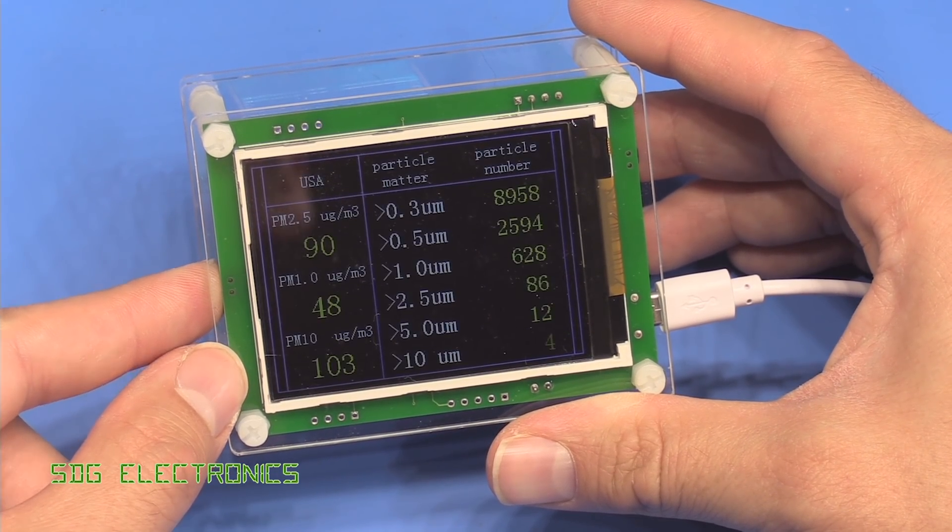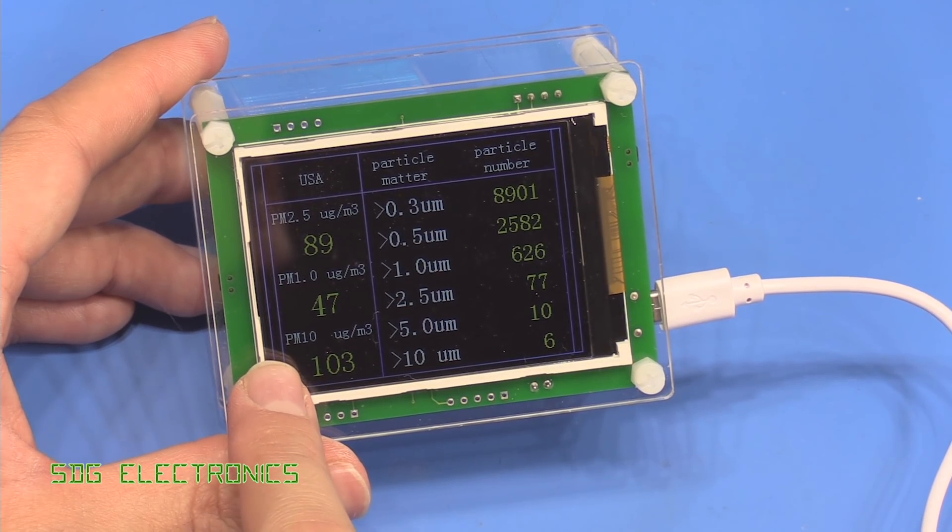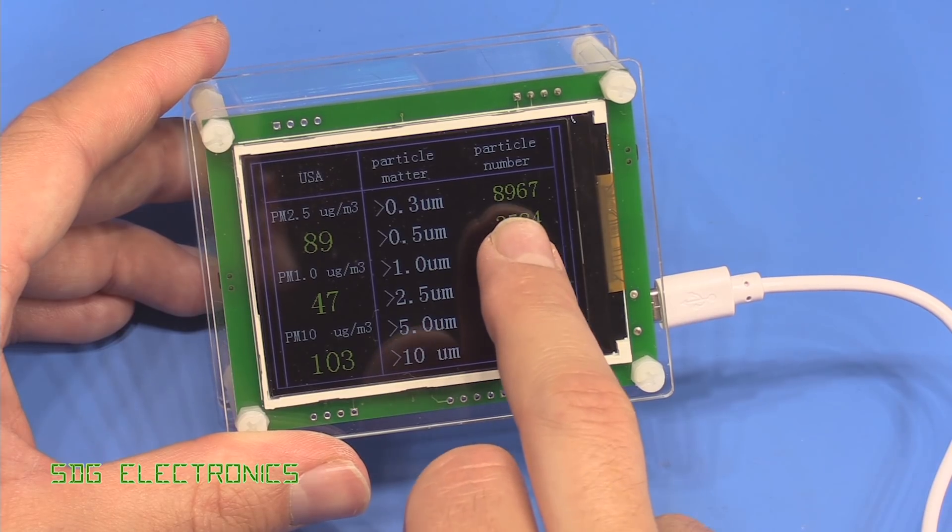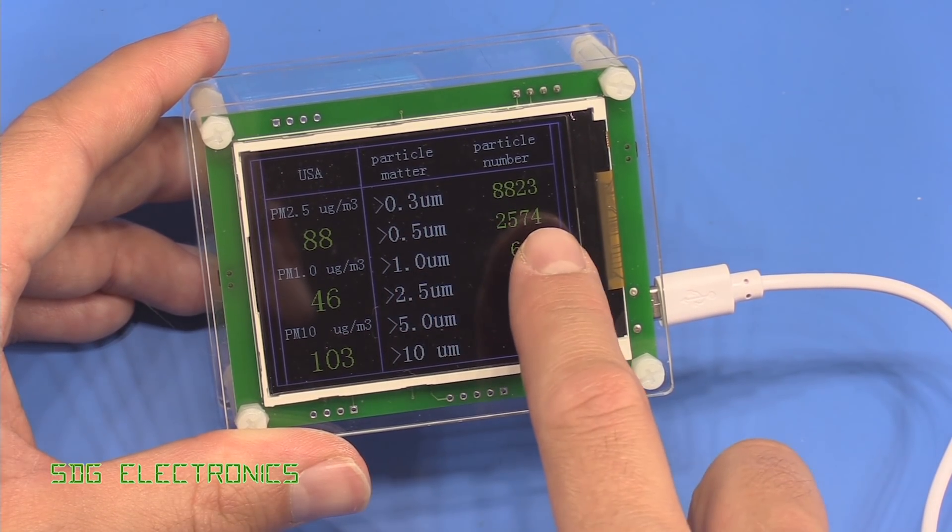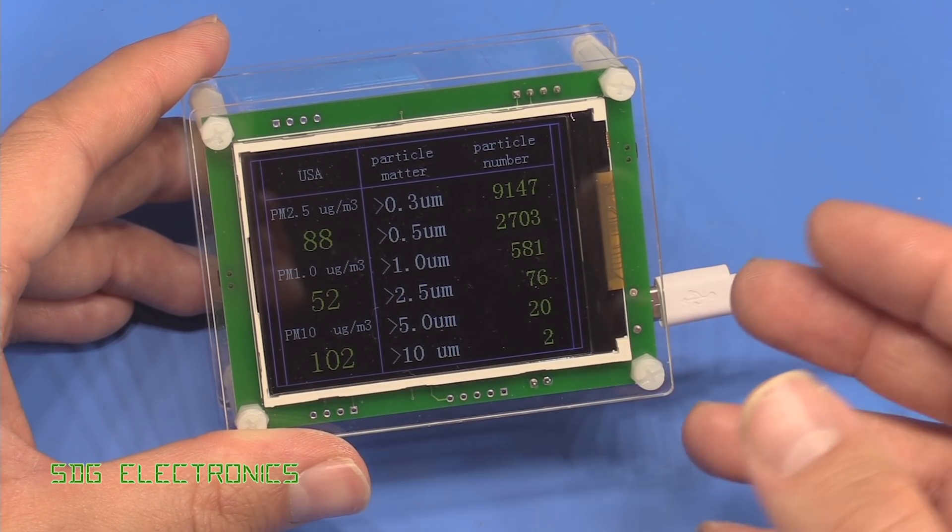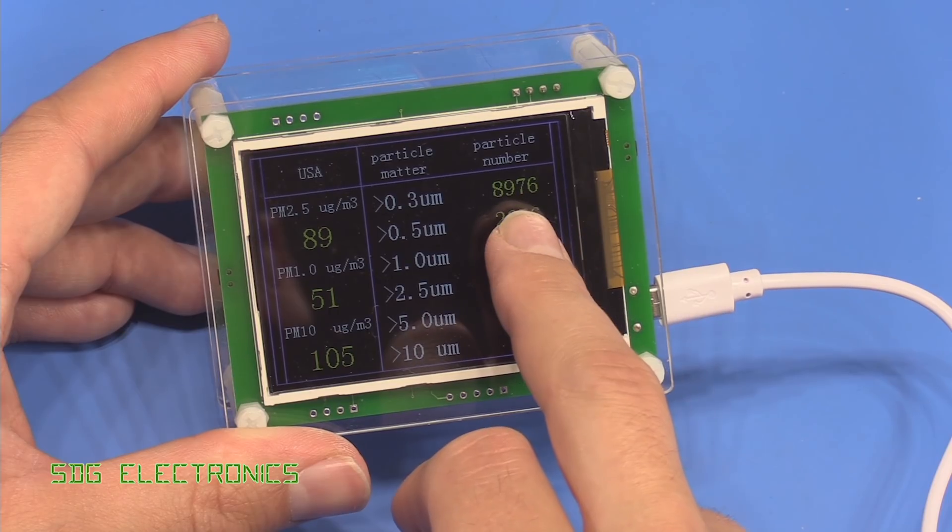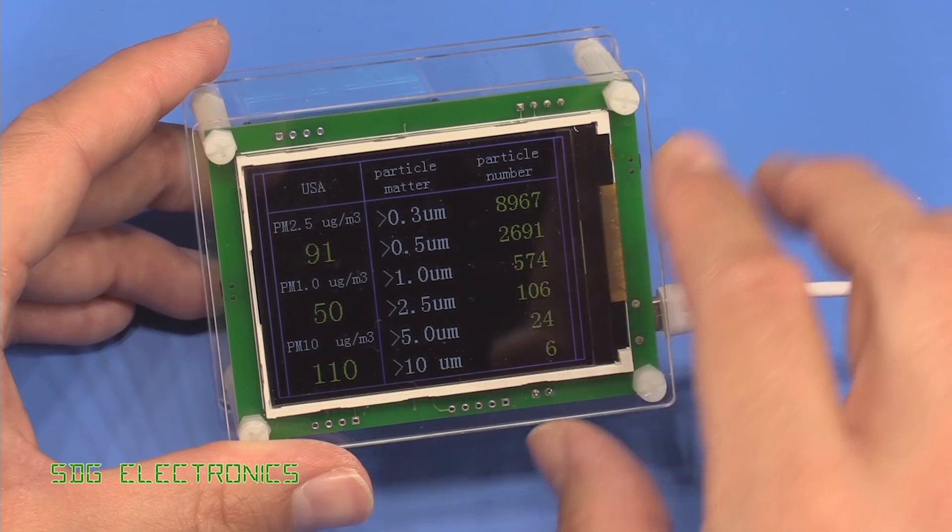There's a button on the side that shows those three figures but also shows particle count of various particle sizes. The 0.3 and 0.5 micron were the only ones that gave readings in the lab. We're getting some relatively high readings here.